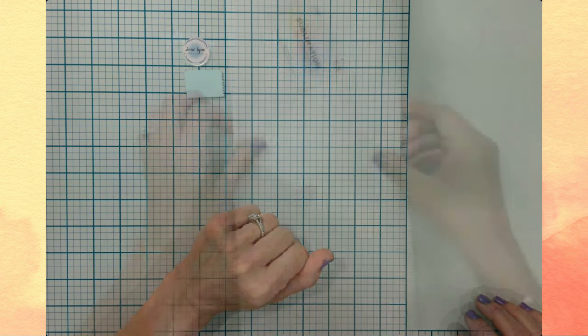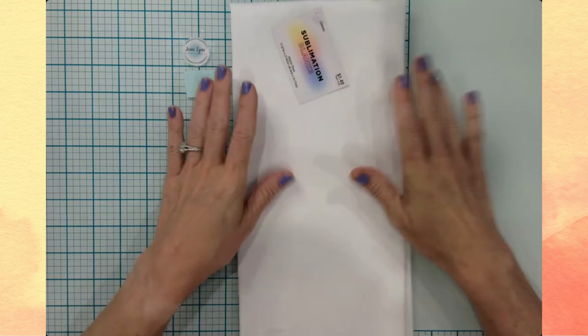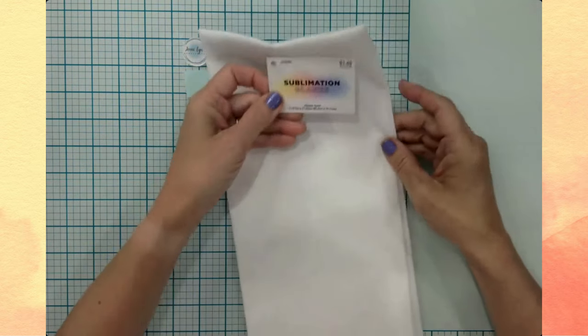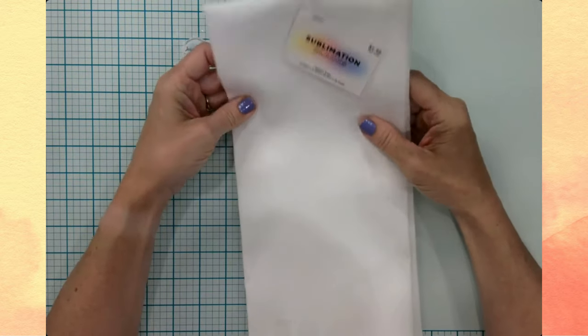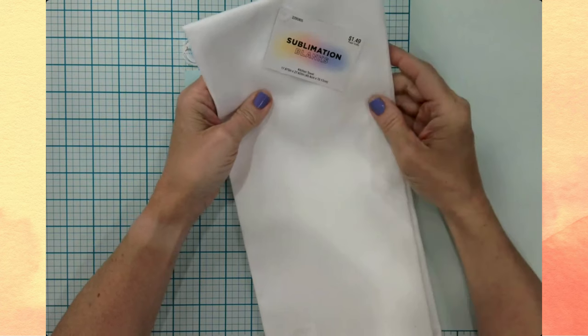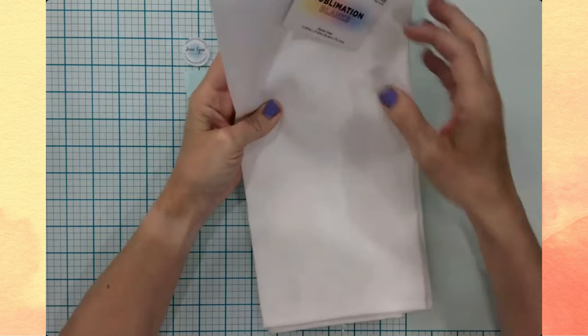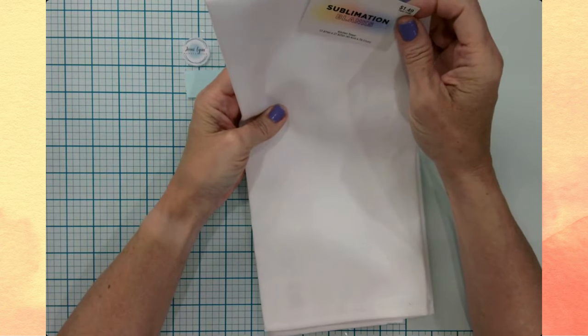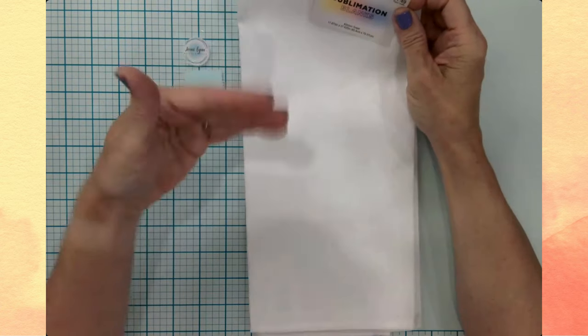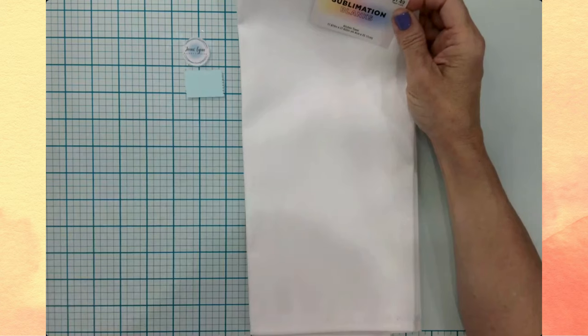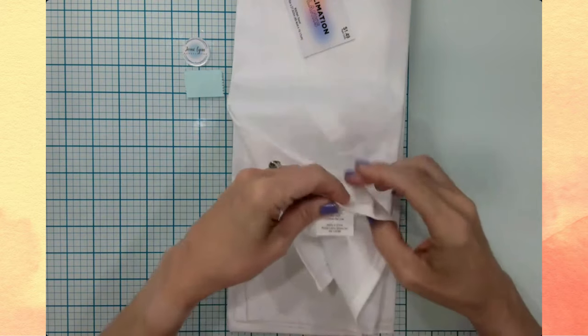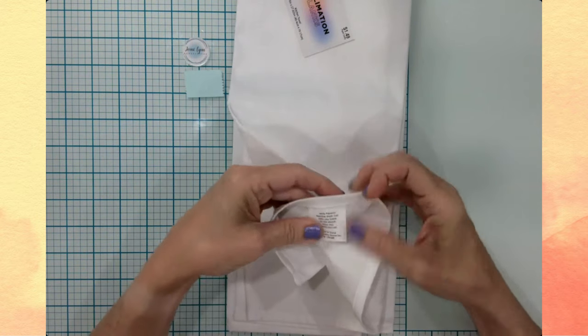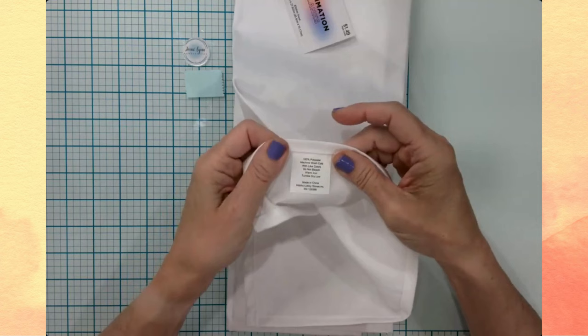For my first craft today, I'm going to be trying out one of these sublimation kitchen towels from Hobby Lobby. Now first of all, I really like the price point. They're only $1.49 and it is a pretty substantial size. So it's basically almost 18 inches by 28 inches. This particular towel is made out of 100% polyester, which is the higher the polyester count, the better the sublimation.